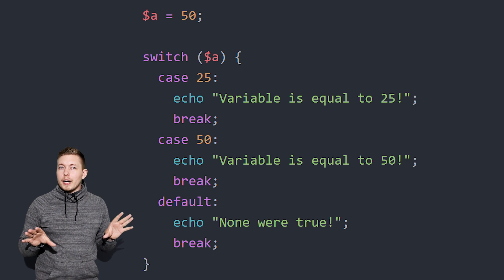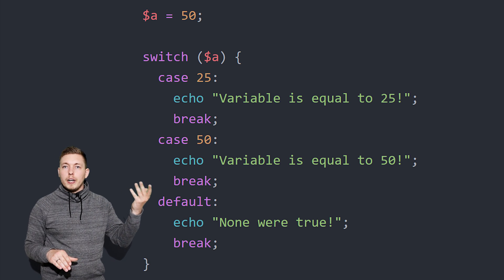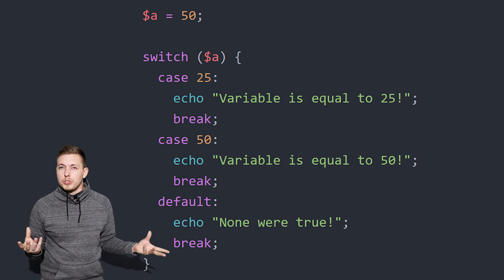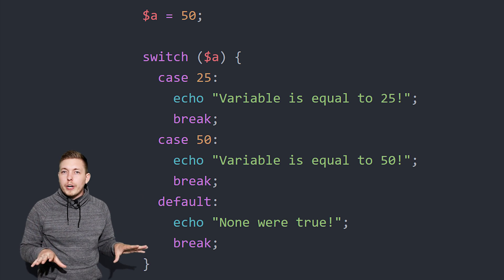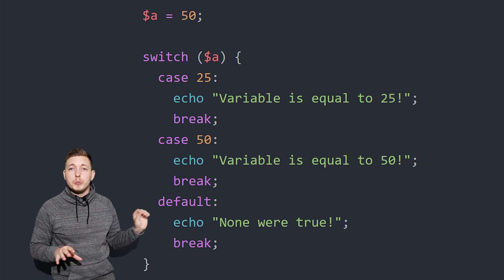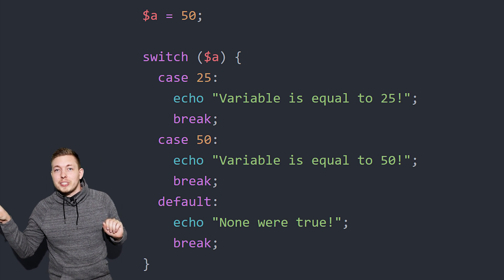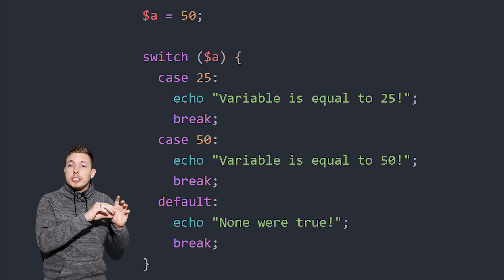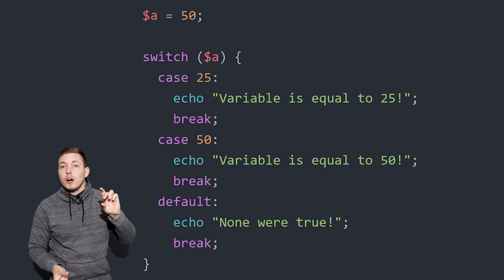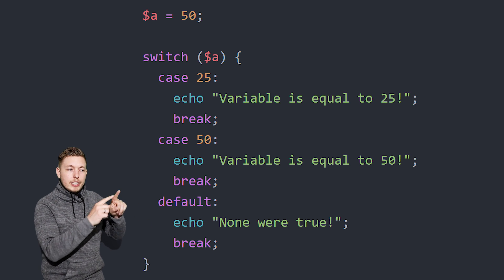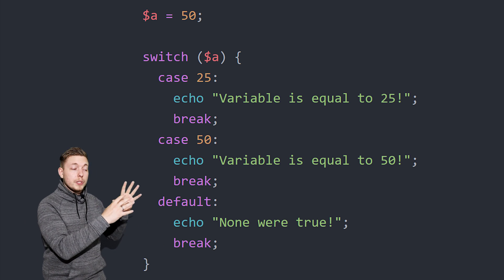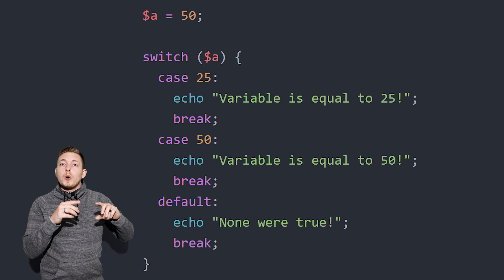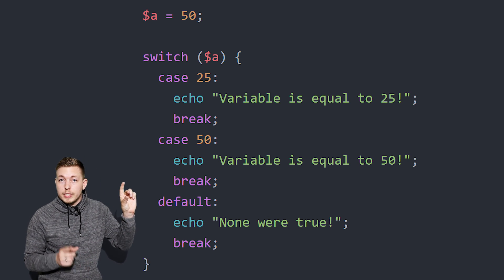This is something that a lot of people have questions about: when should we use an if-else if statement, and when should we use a switch statement? They seem to have a similar purpose. The short answer is: use a switch statement whenever you have just one value that you need to run a certain block of code depending on. With if statements, inside the parentheses we can run multiple conditions or do something much more advanced, whereas a switch just runs a block of code depending on one value. That's important to note.